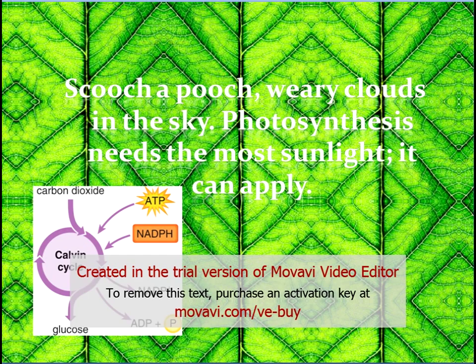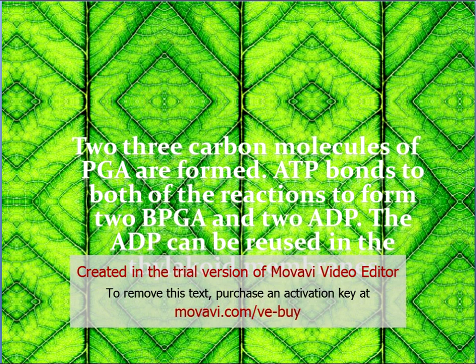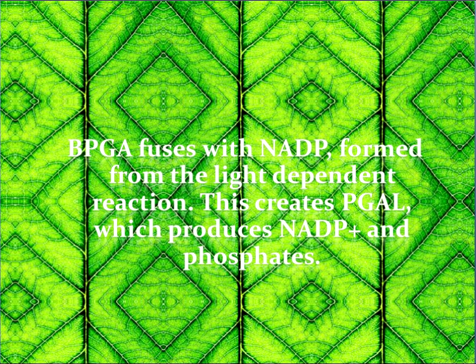Two 3-carbon molecules of PGA are formed. ATP bonds to both of the reactions to form 2-BPGA and 2-ADP. The ADP can be reused in the thylakoid membrane. BPGA fuses with NADPH formed from the light-dependent reaction.